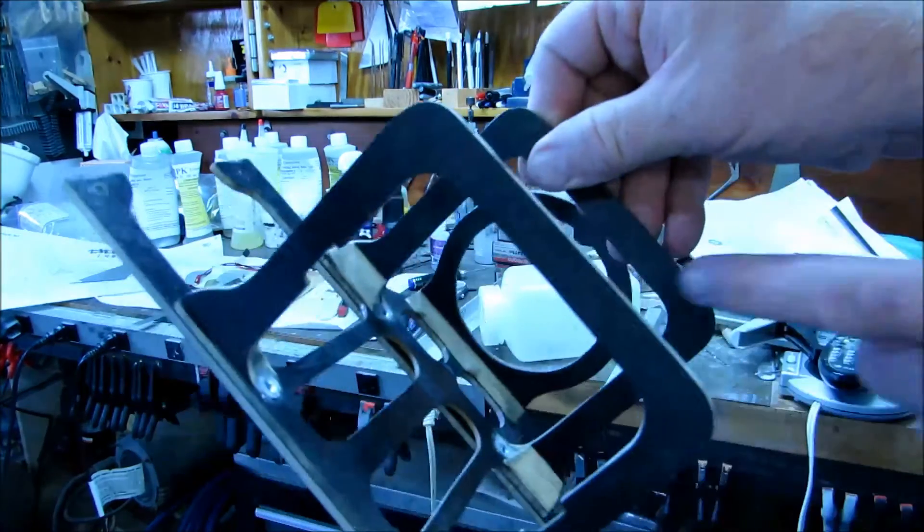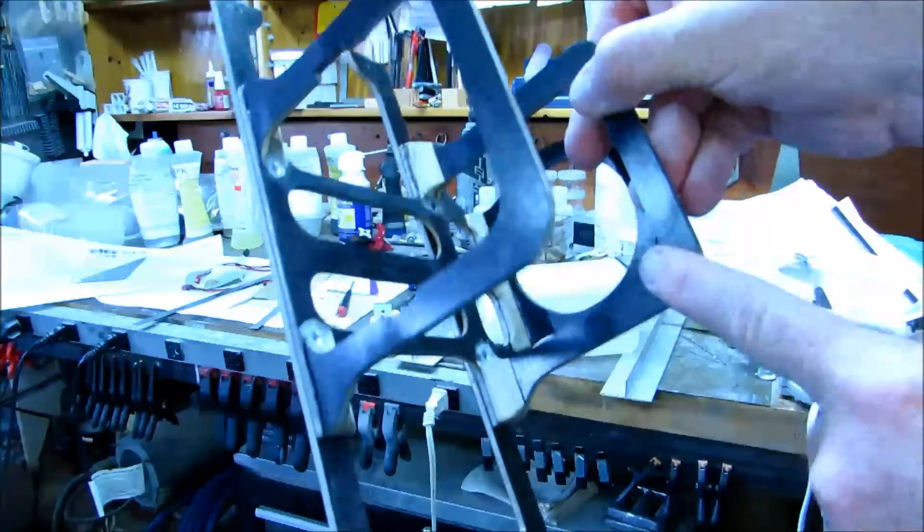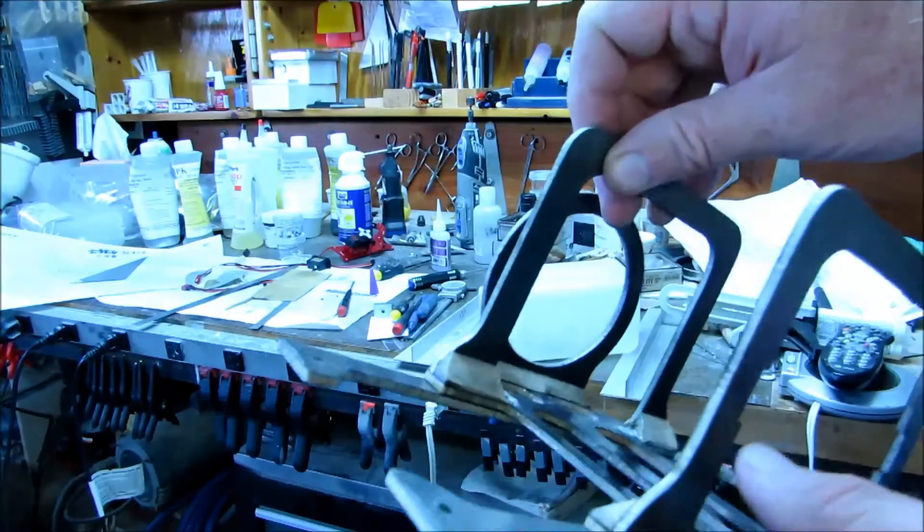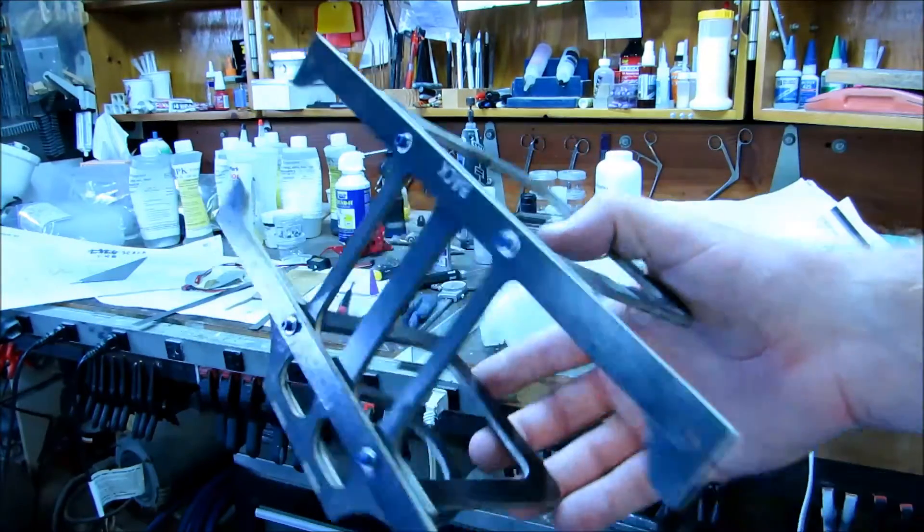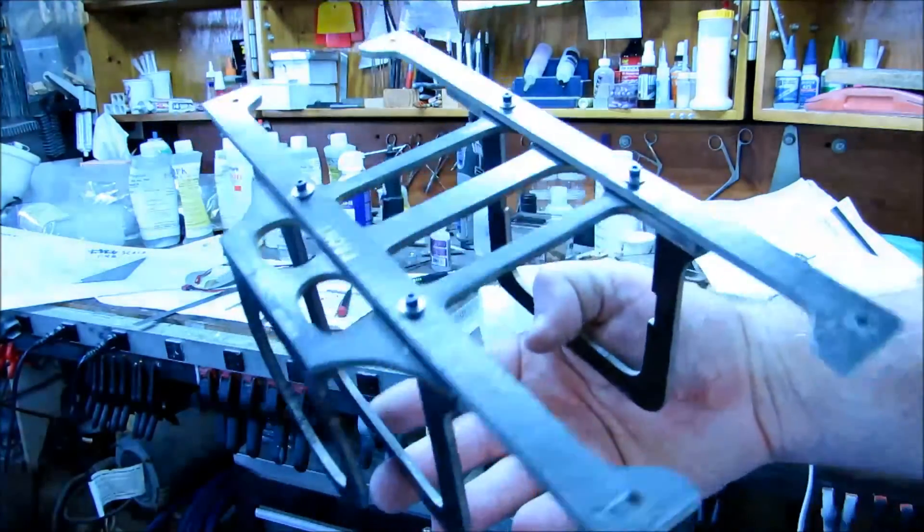And then the same thing on the backside. And so you laminate up a great big piece of that and then you cut it up into little parts like this. And it makes for an extremely stiff assembly.